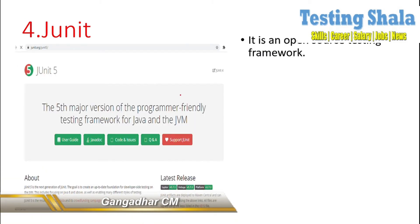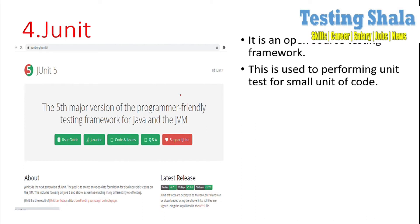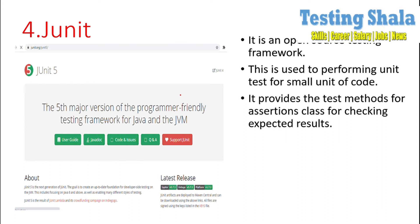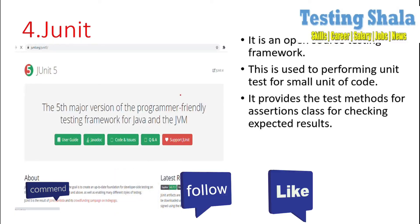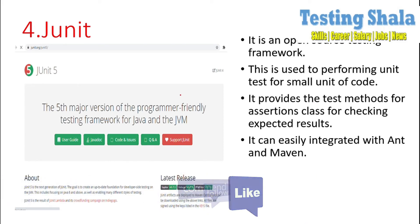The fourth one is JUnit. JUnit is especially used to automate unit test cases or functional test cases. JUnit is an open source framework that can be used to perform unit testing for a small unit of code. It also provides various testing methods and assertion classes for checking expected results. JUnit can be very easily integrated with Ant and Maven.